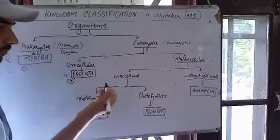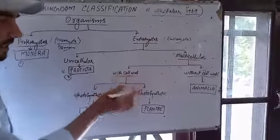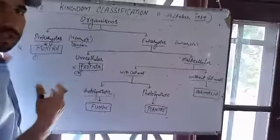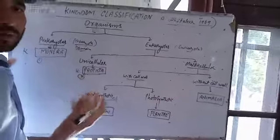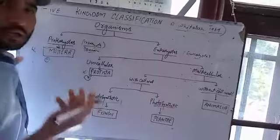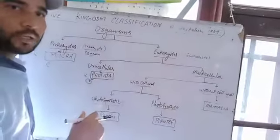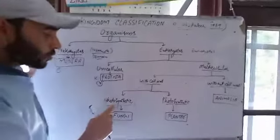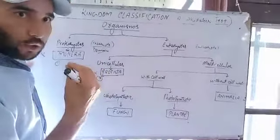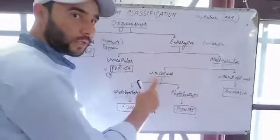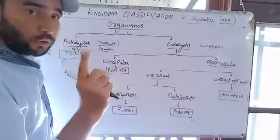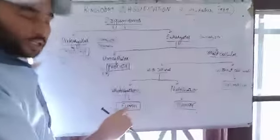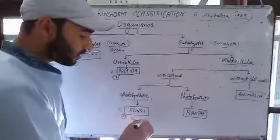Another criterion for organisms with a cell wall is whether they are photosynthetic or non-photosynthetic. Non-photosynthetic organisms cannot prepare their own food. Those organisms which do not perform photosynthesis but do have a cell wall form the third kingdom — Kingdom Fungi.